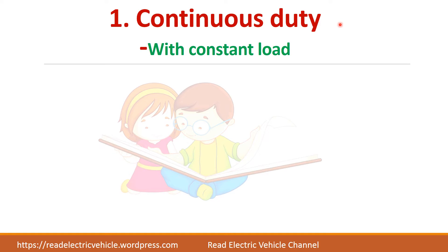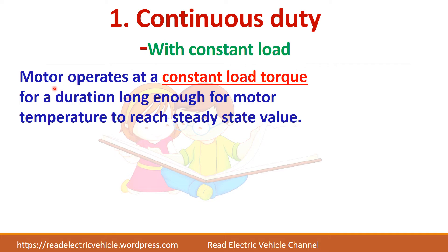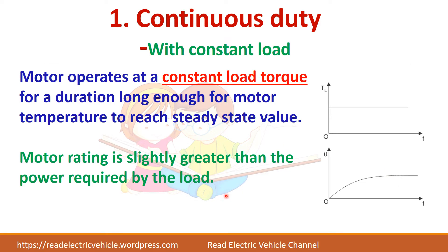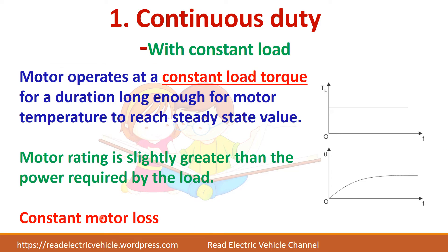First, we will see continuous duty with constant load. Here, the motor always operates with a constant load torque, such that the temperature rises and reaches the steady state value. In this case, the motor rating should be slightly greater than the power required by the load. Because if you choose a lower rating, your temperature may exceed and burnout may occur. So it is always better to choose a rating greater than the power required by the load. Since the load is constant, the losses will also be constant.